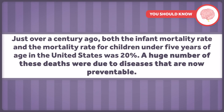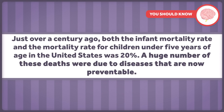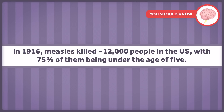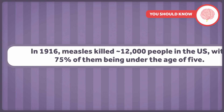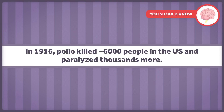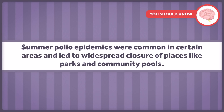Just over a century ago, both the infant mortality rate and the mortality rate for children under five years of age in the United States was 20%. A huge number of those deaths were due to diseases that are now preventable. For example, in 1916, measles killed almost 12,000 people in the United States, with 75% of them being under the age of five. In 1916, polio killed around 6,000 people in the United States and paralyzed thousands more. Summer polio epidemics were common in certain areas and led to widespread closure of places like parks and community pools.